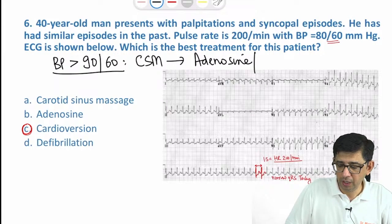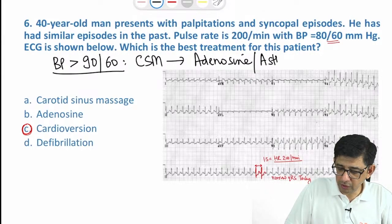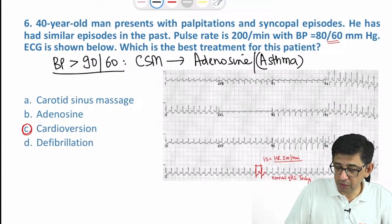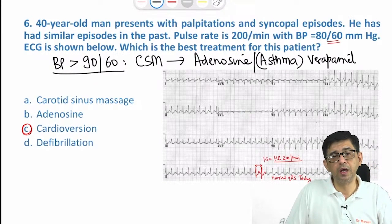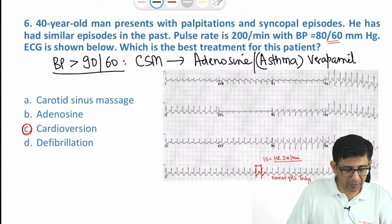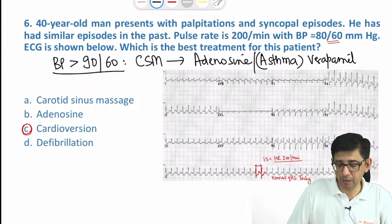The trick in the exam can be that in a PSVT MCQ, he says the patient is asthmatic. If the patient is asthmatic, you will not give adenosine. Then the answer would be verapamil, which can do the same thing and help control the PSVT.